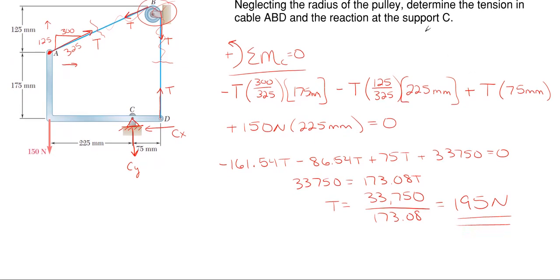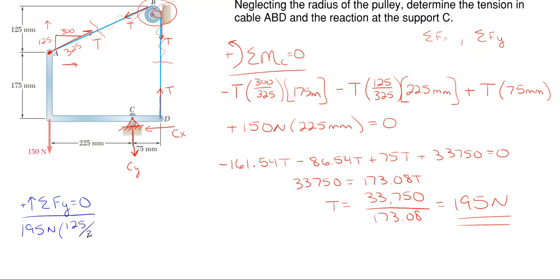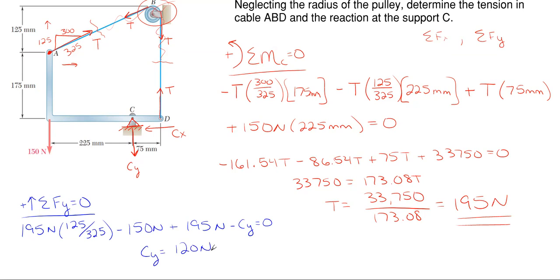Now that we have the tension force, we can sum forces in the x direction to give C sub X, and sum forces in the y direction to give C sub Y, since these are now the only remaining unknowns. Let's do the vertical direction first: 195 Newtons times 125 over 325 — positive since it's pointed upward — minus 150, plus 195 Newtons for the other T portion at D, minus C sub Y. Solving this equation, C sub Y comes out to be 120 Newtons positive, which means my assumed arrow direction downward was correct.